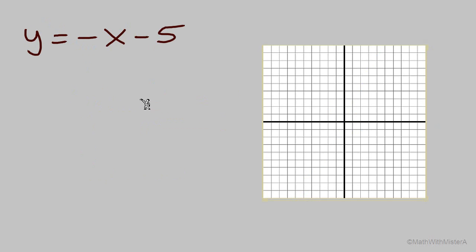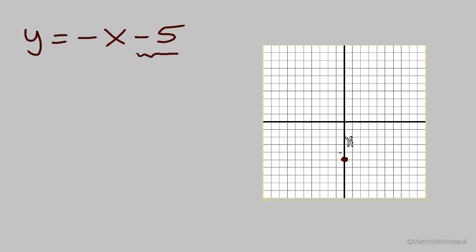How about this next example? Again, start with the y-intercept. This time it's at negative 5, so our first point, the y-intercept, is down 5 on the y-axis.